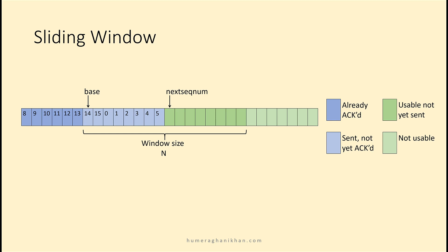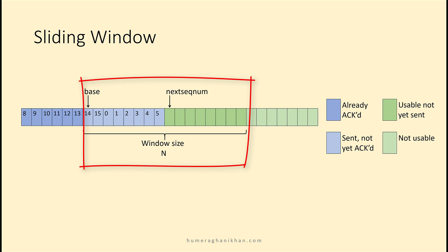Now we will study an example to understand the sliding window concept. Assume packets 8, 9, 10, 11, 12, and 13 were sent earlier and their acknowledgements have arrived, so their matter is resolved. These packets are not in the window — the window is this region. If the upper layer gives some more packets, they can be delivered on the transmission channel immediately.